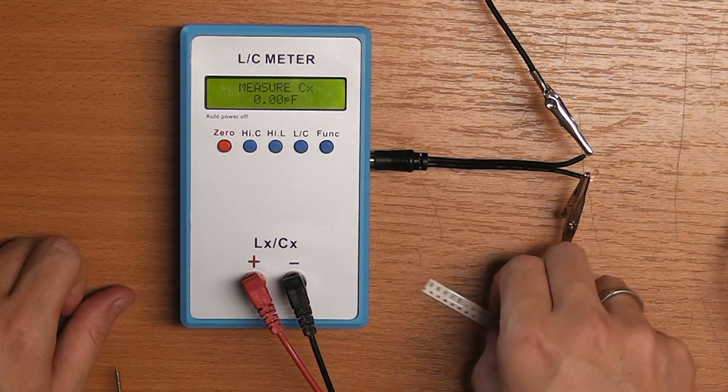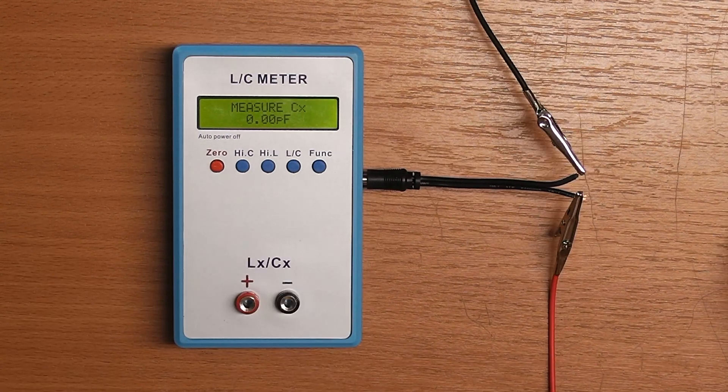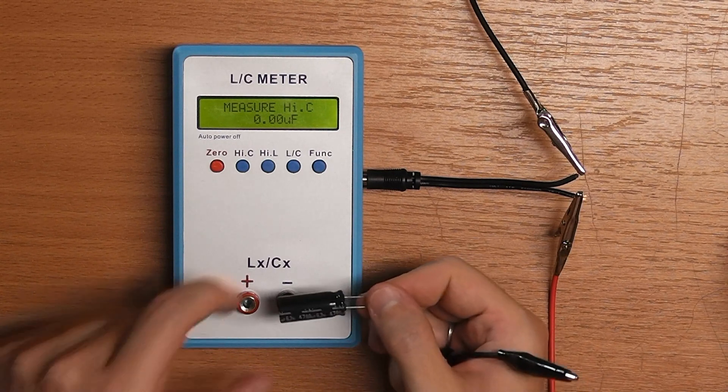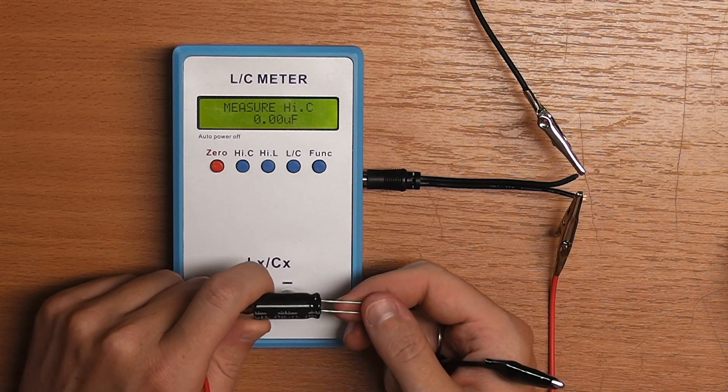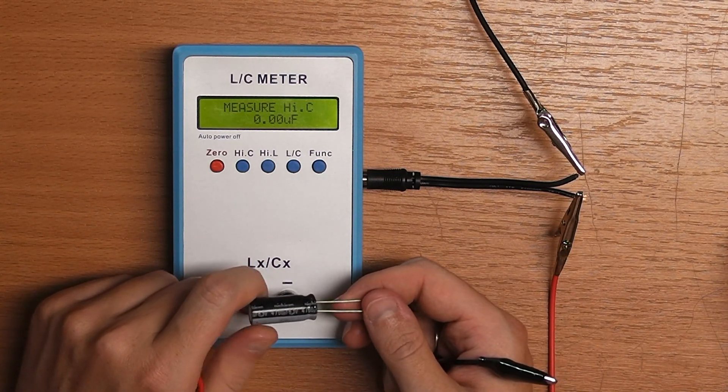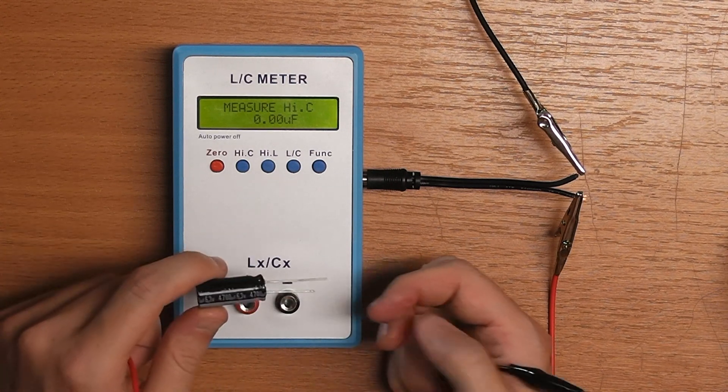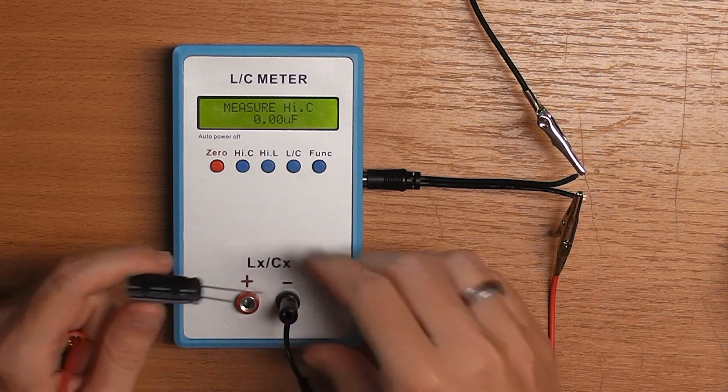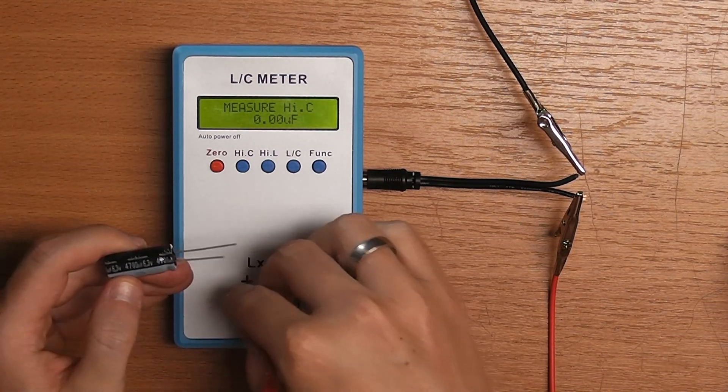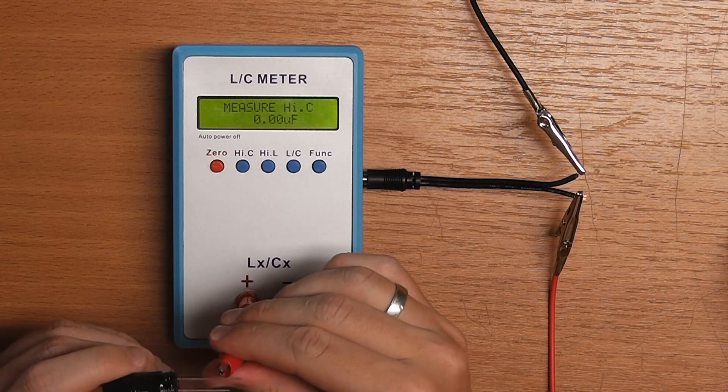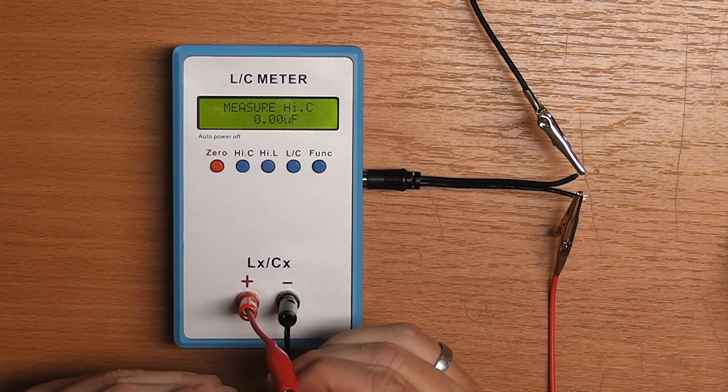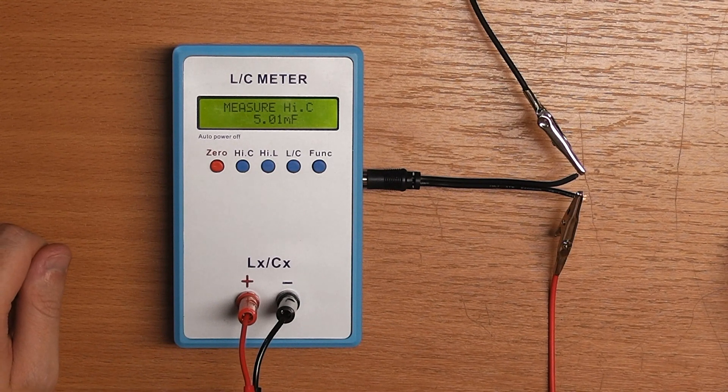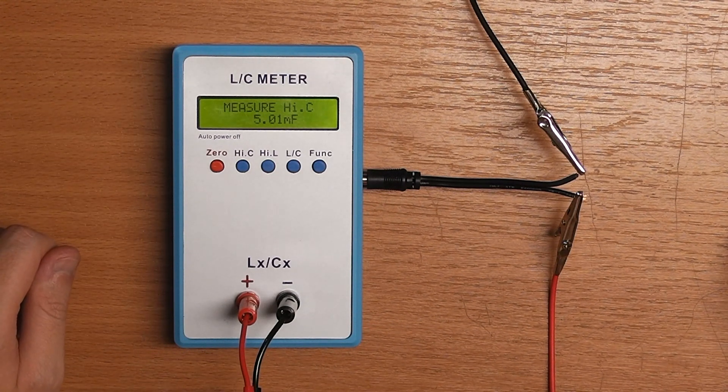I'm going to measure some larger capacitors now. So for this measurement, I'm going to enter high capacitance mode. This is a Nikicon 4700uF, which I earlier measured with a different instrument to have about 4.9 mF. So I'm expecting to see around that value. And it says 5.01 mF. So this is pretty good.